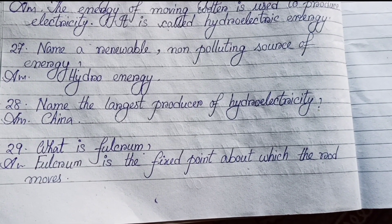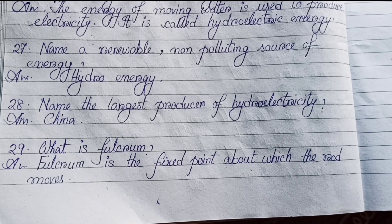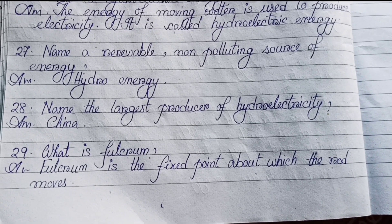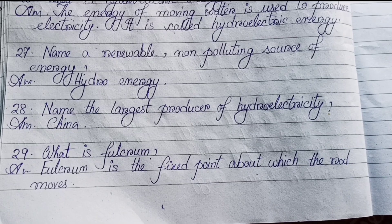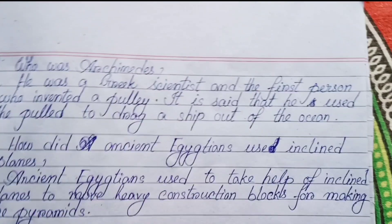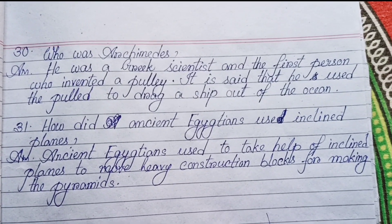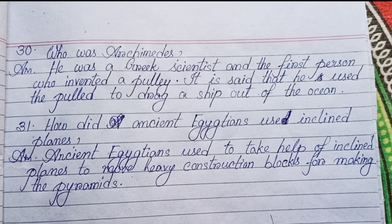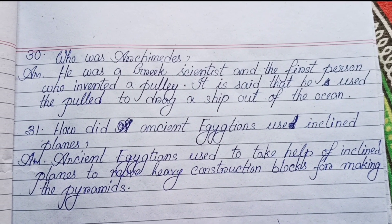Number twenty-seven: Name a renewable, non-polluting source of energy — hydro energy. Number twenty-eight: Name the largest producer of hydroelectricity — China. Number twenty-nine: What is fulcrum? Fulcrum is the fixed point about which the rod moves.